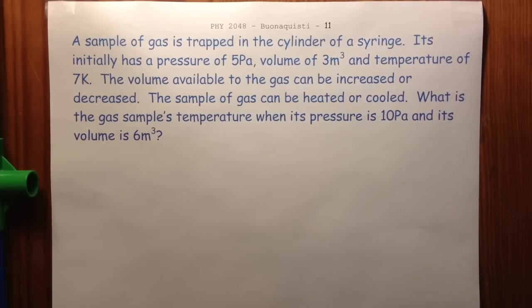So this problem says a sample of gas is trapped in a cylinder of a syringe. It initially has a pressure of 5 Pascal, volume of 3 cubic meters and a temperature of 7 Kelvin.